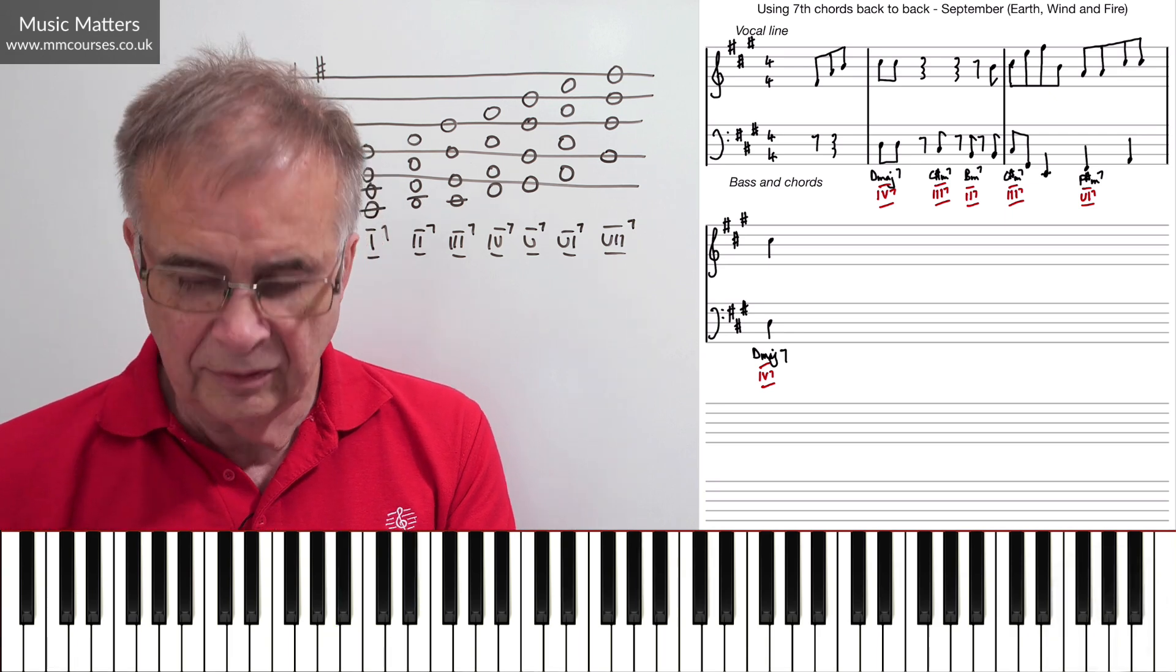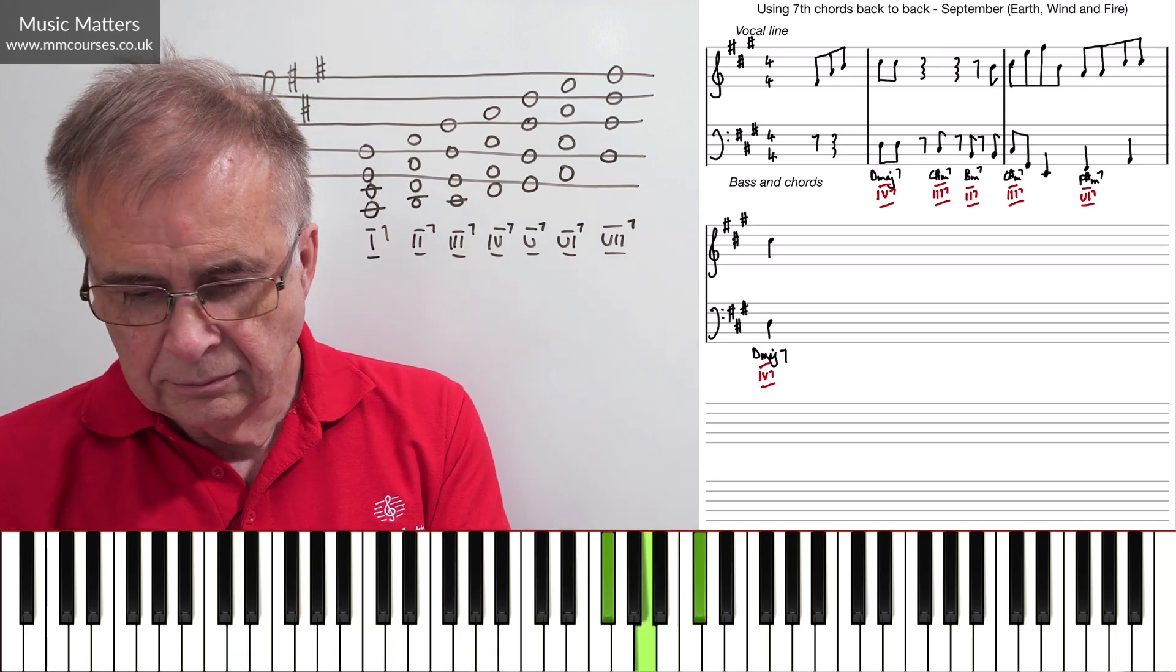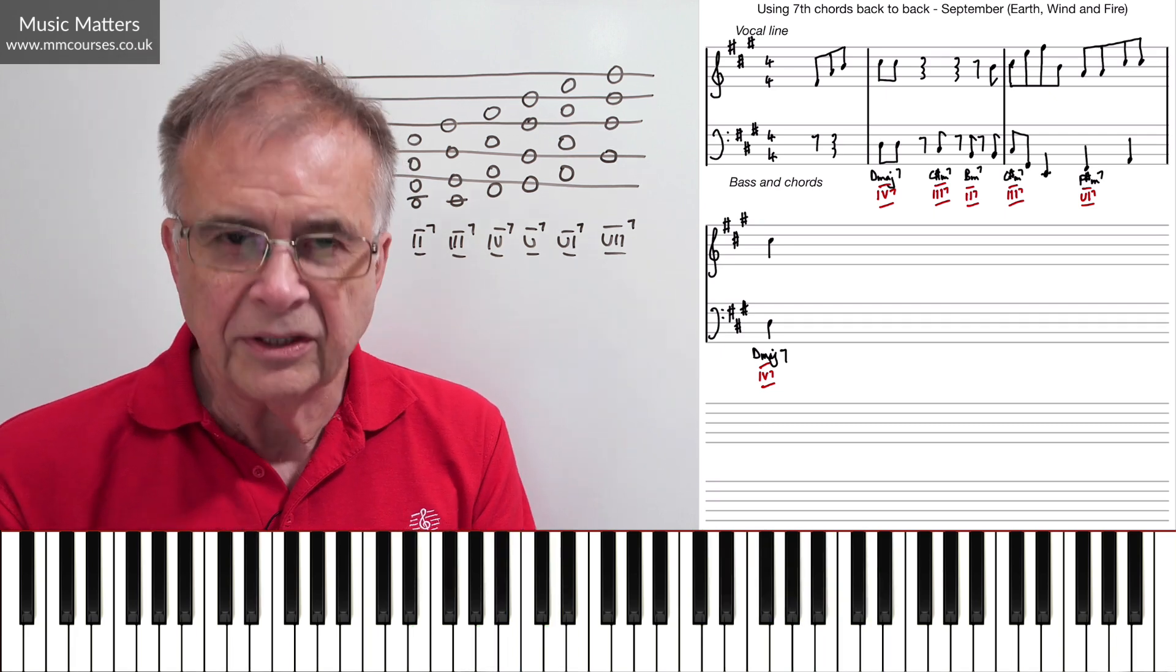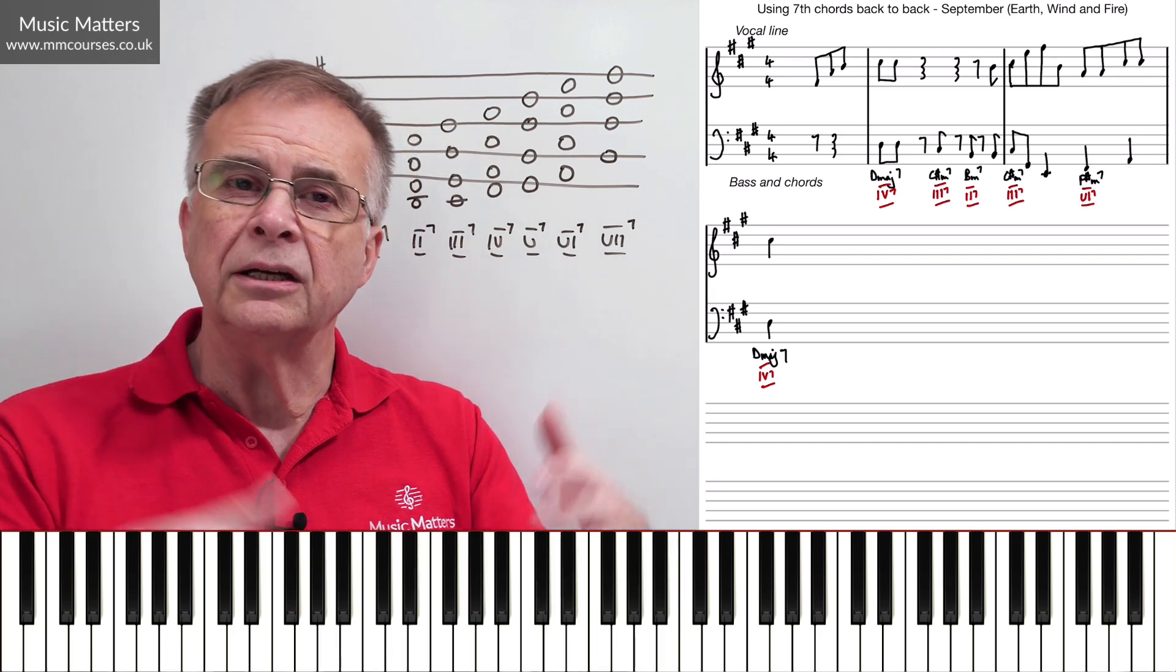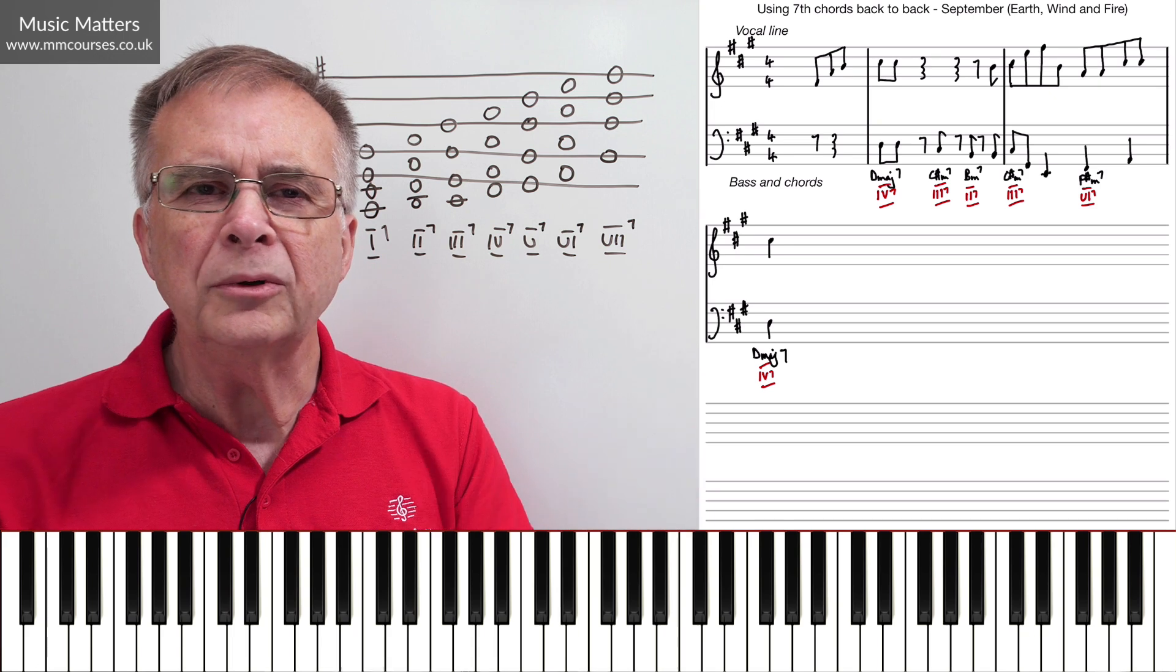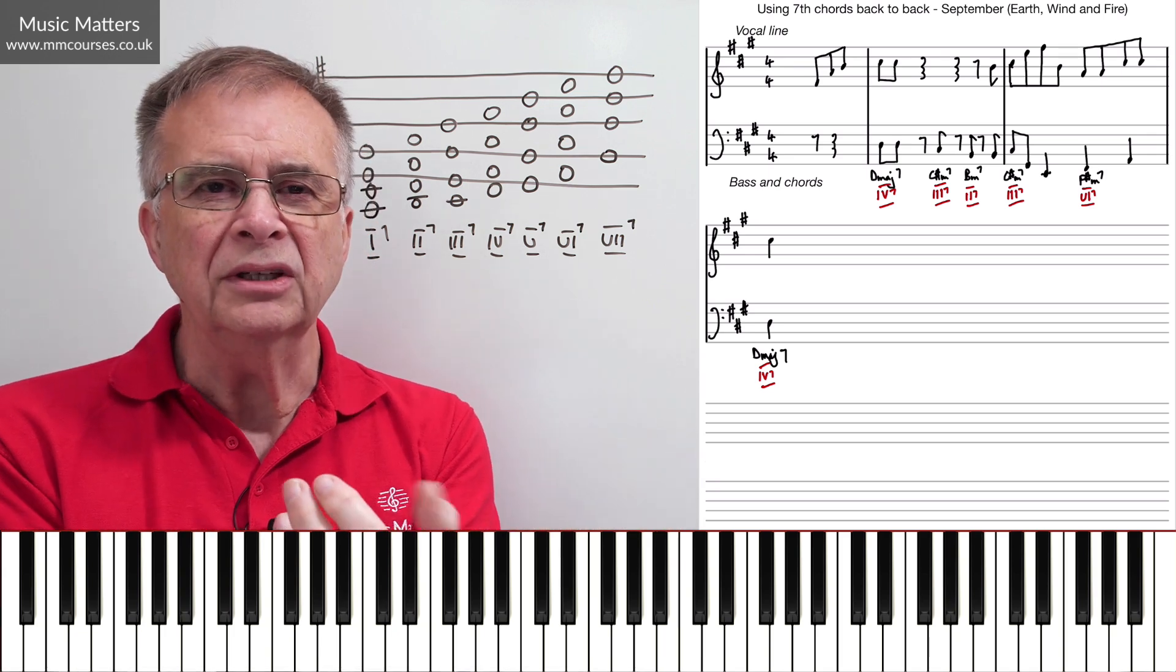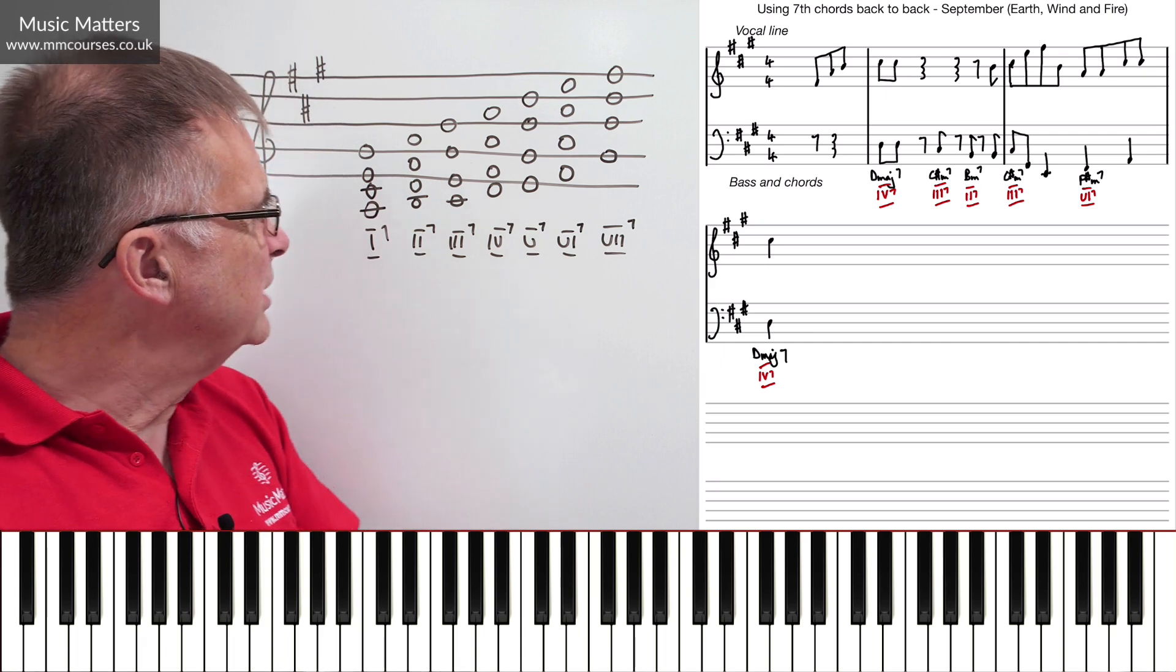So a sort of I7, IV7, and then maybe a II7, V7, back to a I7. Do you see what I'm doing there? It's kind of like very cocktail piano-ish now, isn't it? So all you're doing is using the normal diatonic chords, but adding a seventh on, not worrying about, well, how does this seventh chord need to resolve? How does it need to function? You're just thinking, can I put it back to back with another seventh chord?